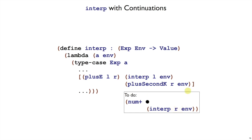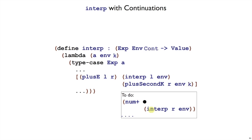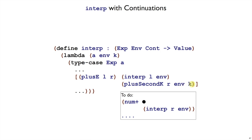This is almost the right idea, but remember plus second k has its third part, which is the rest of the to-do list. So whatever the dot dot dots are down here, that's going to be some other continuation k. Where does that continuation come from though? Well, that continuation is where we're supposed to deliver the result of adding the number. Whoever called interp knows what the rest of the things to do is. So that's why we add a new argument k to interp.